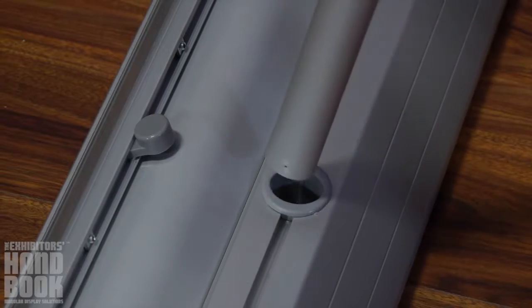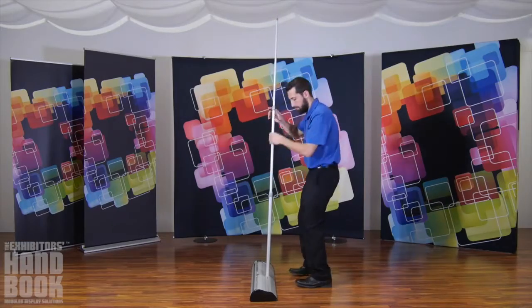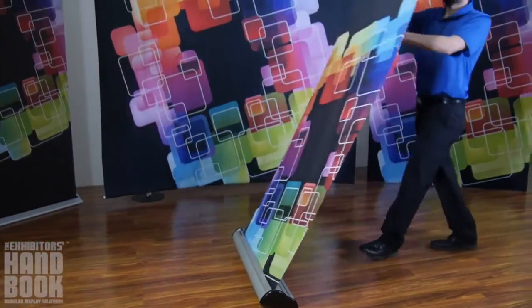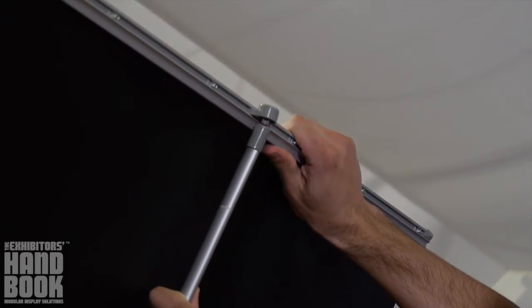Next, insert the pole into the base of the stand. Gently raise your graphic, leaning the entire stand towards you. Pull the graphic's top rail above the pole and secure into place.